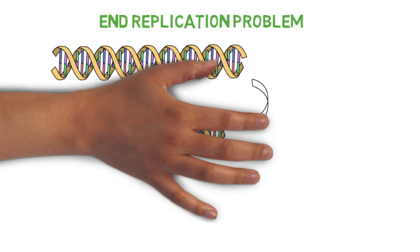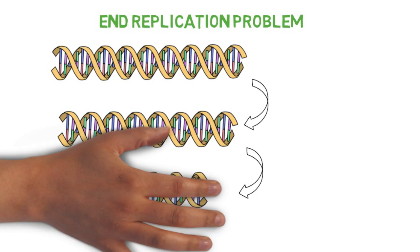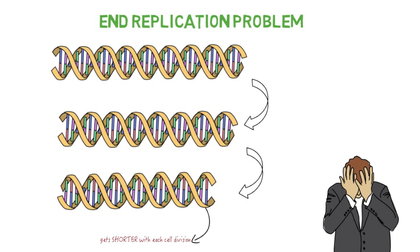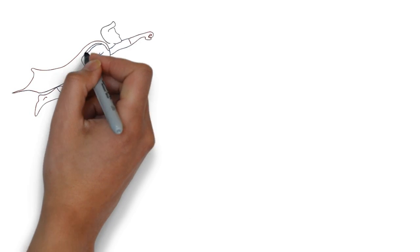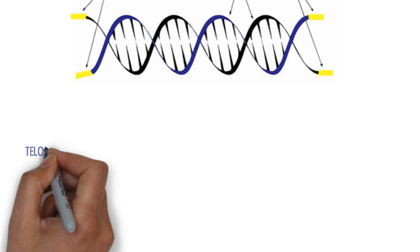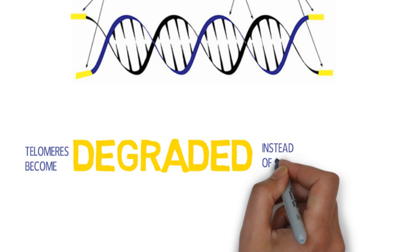the great end replication problem. When DNA gets replicated, it gets a little bit shorter and shorter each time. If the DNA loss each time was important genes that coded for the proteins in your body, well, it would be a disaster. But telomeres protect the ends of your DNA so that the non-coding TTA-GGG sequences are degraded, not the important stuff.